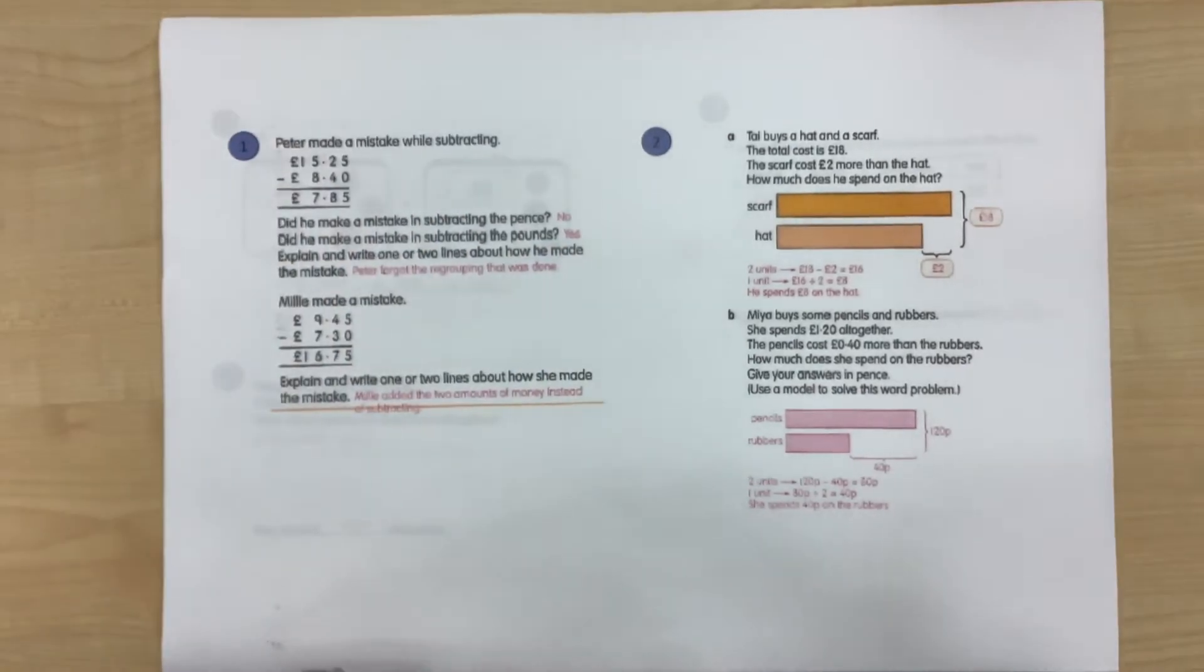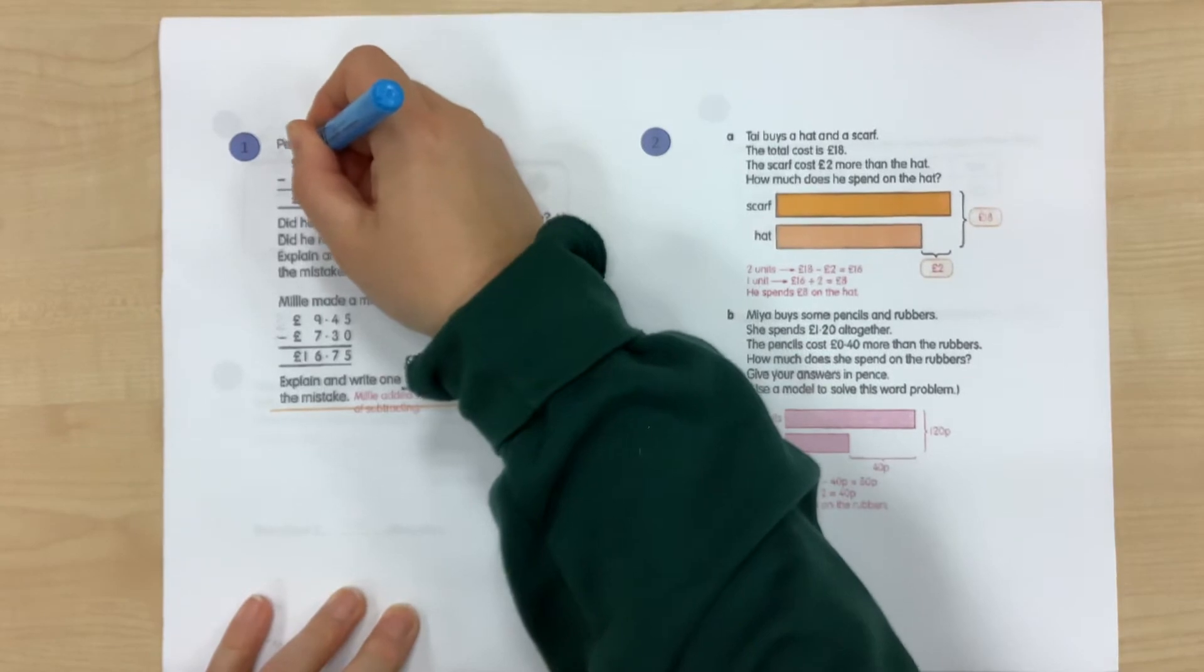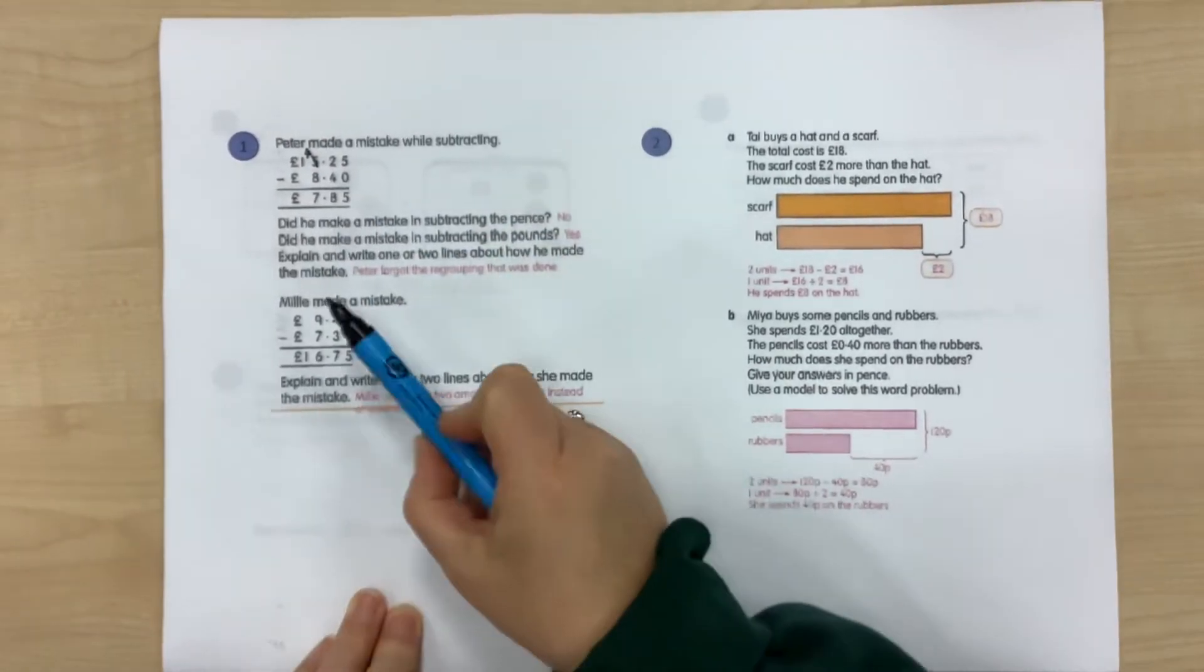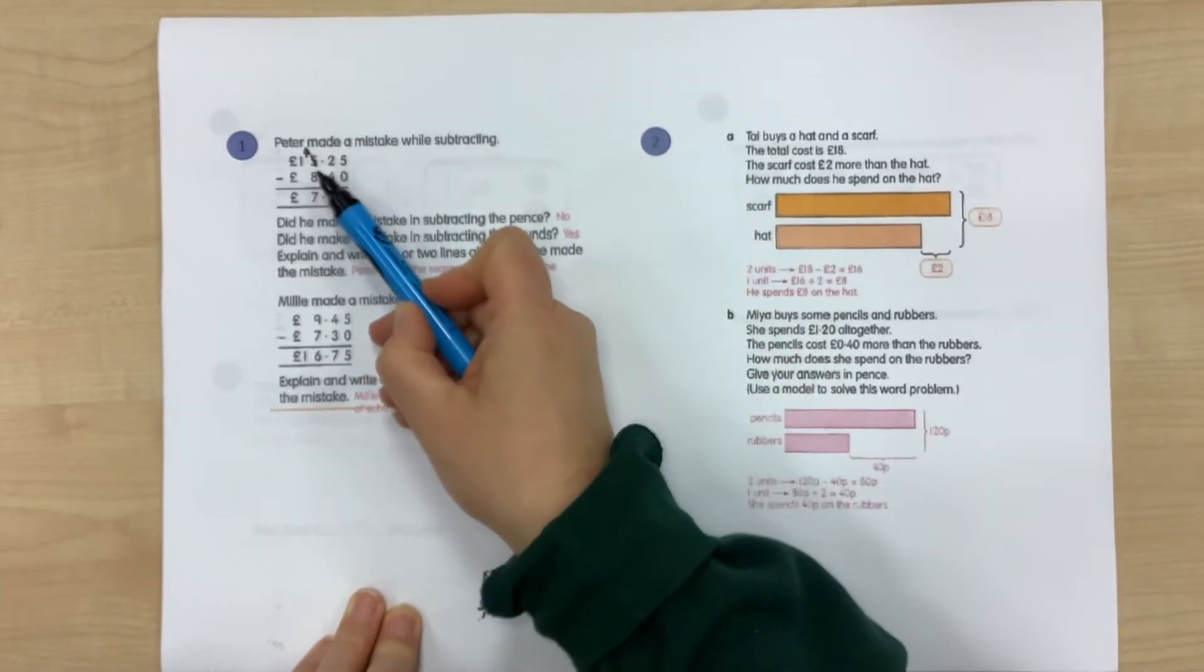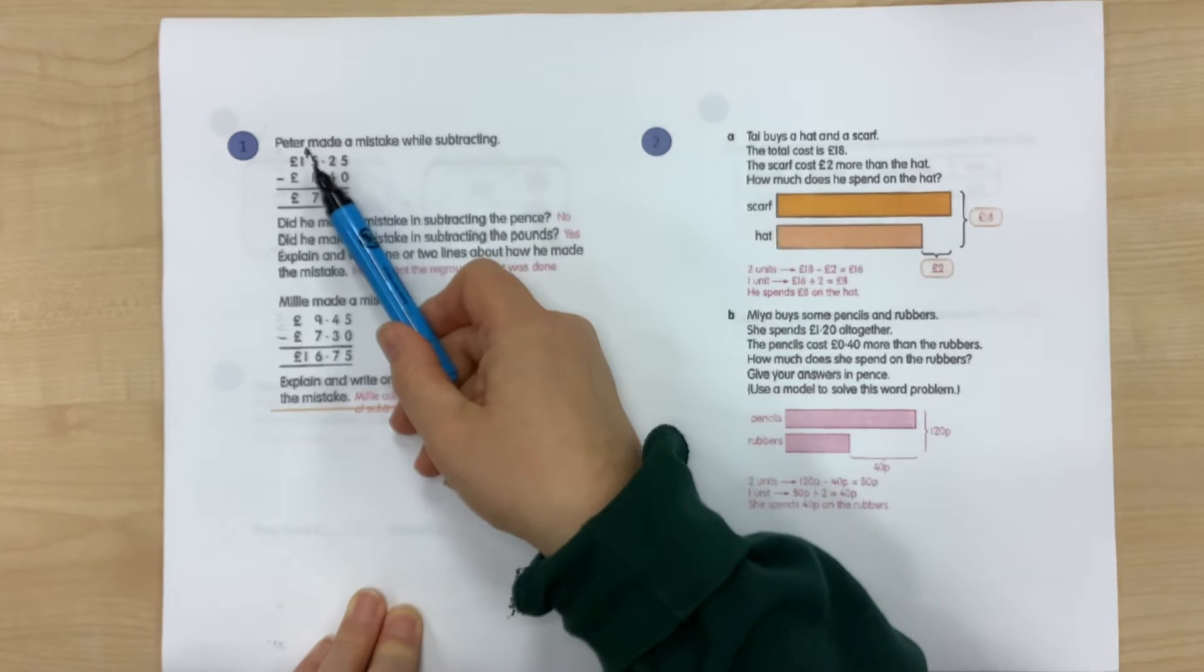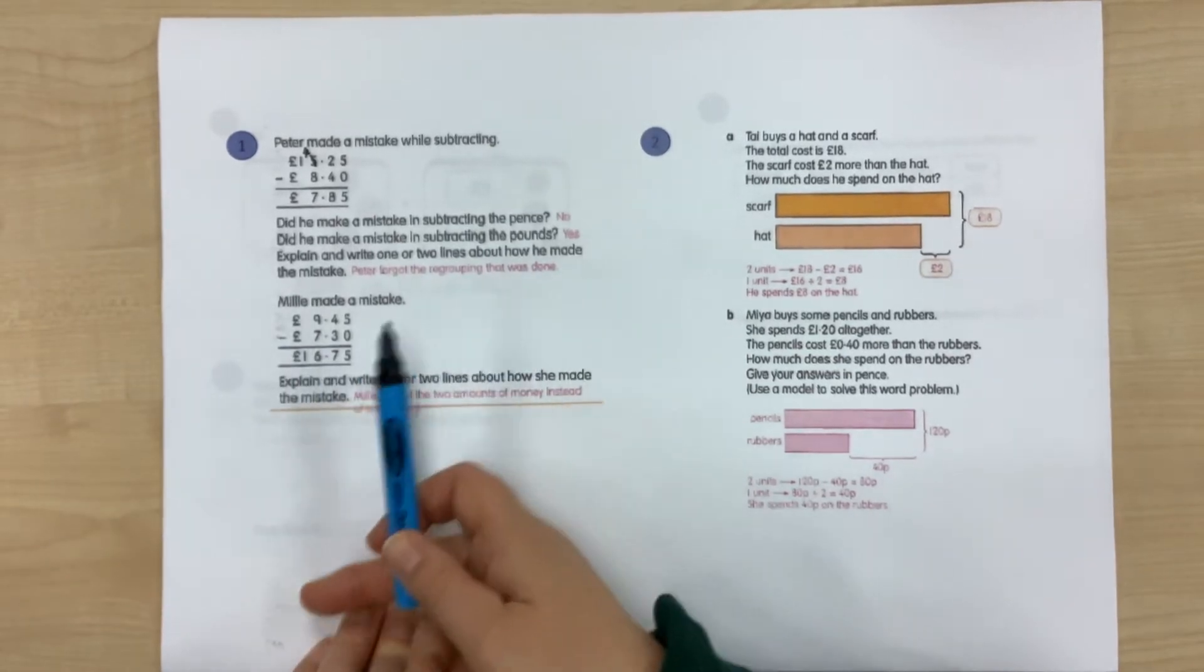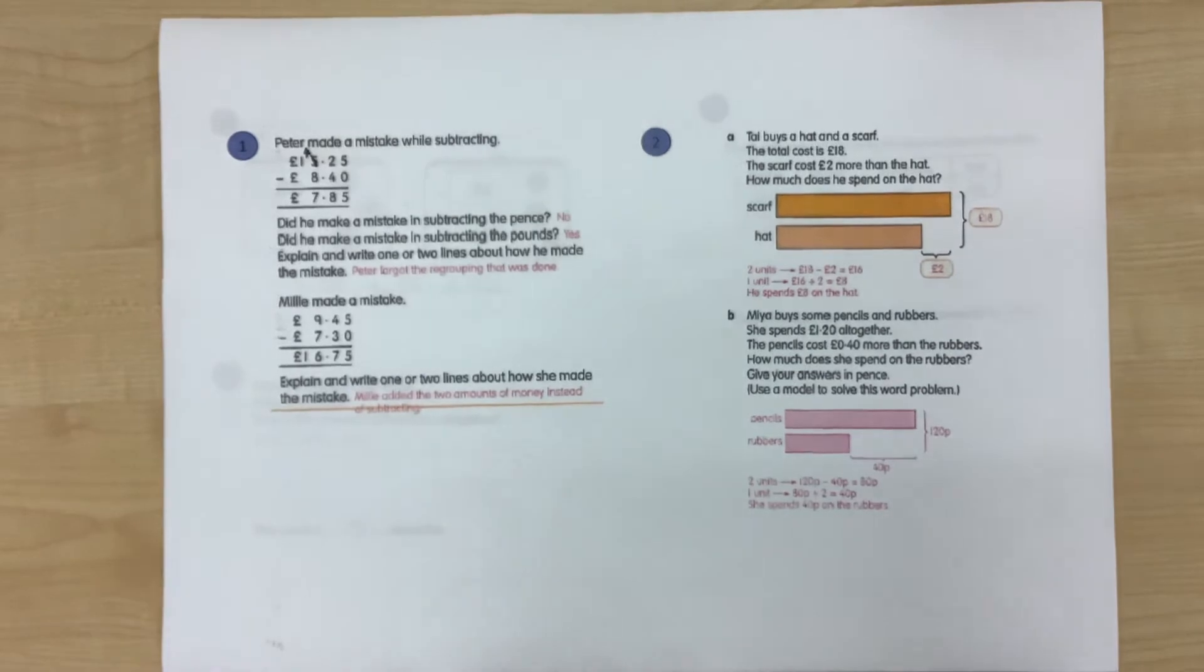Did he make a mistake in subtracting the pounds? If we had regrouped one of these pounds, that would mean that we had 4 pounds in this column. So has he made a mistake in subtracting the pounds? Yes, because he has forgotten that the regrouping was done, and he's subtracted 8 pounds from 15 rather than 14. And then we have the explanation of the mistake that he made. Peter forgot the regrouping that was done.